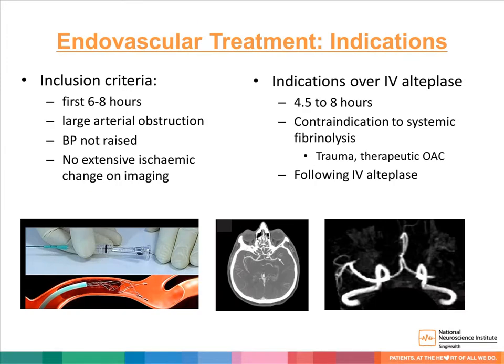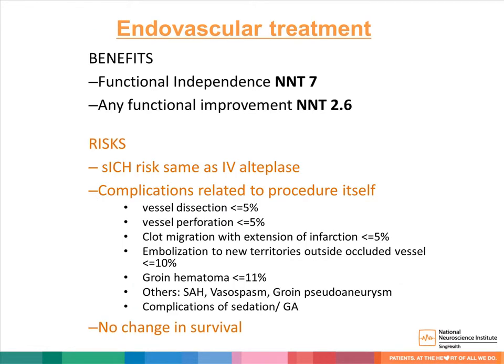The other reperfusion strategy is endovascular treatment using a stent retriever device. This has been proven beneficial in the first six to eight hours from onset. There must be a large arterial obstruction, blood pressure within the required range, and no extensive ischemic change on imaging. There are three indications for endovascular treatment over intravenous alteplase: it can be given beyond 4.5 hours up to eight hours, to patients with contraindications to systemic fibrinolysis such as recent trauma or oral anticoagulation, and concomitantly after intravenous alteplase. The benefits include increased likelihood of independence with a number needed to treat of 7, and better functional improvement with a number needed to treat of 2.6. Risks include symptomatic intracranial hemorrhage, procedural complications, and similar to alteplase, endovascular therapy does not change survival.